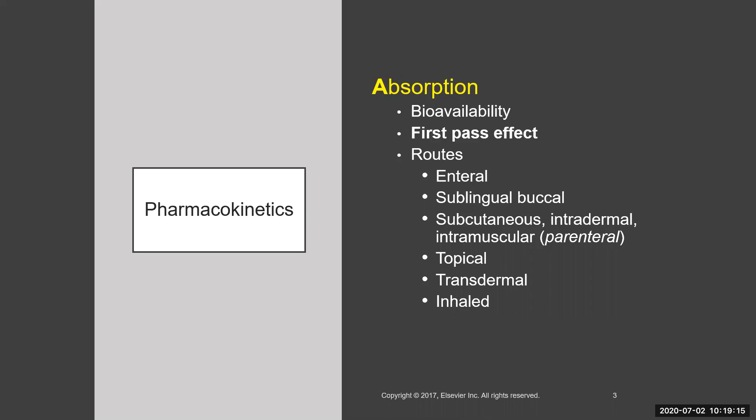There are various routes of administration for drugs to be absorbed. Enteral means it goes right into your stomach, either by swallowing through the mouth or through an enteral feeding tube placed directly into the stomach or small intestine. Sublingual is under the tongue, and buccal is in the cheek — for example, certain medications delivered by holding them in the cheek area. These are not exactly the same thing as sublingual.